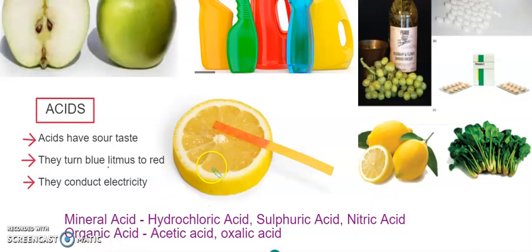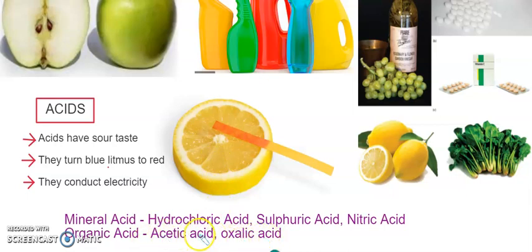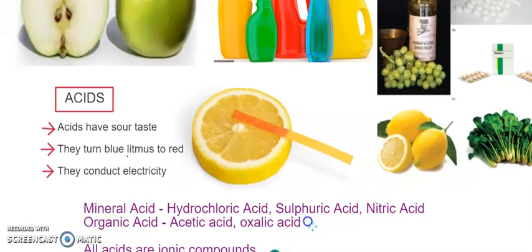Organic acids are those you get from lemon, tomato, or tamarind — the sourness you get when you eat these things. They are called acetic acid and oxalic acid. Acetic acid is nothing but vinegar. Because we obtain them from nature, we call them organic acids.